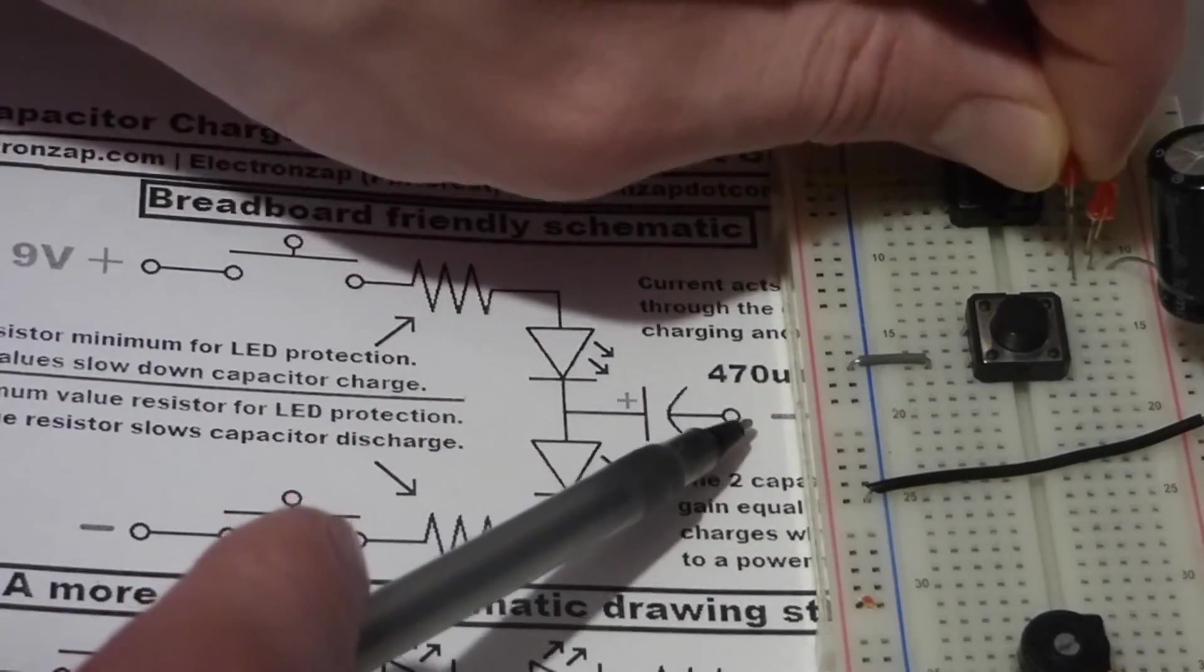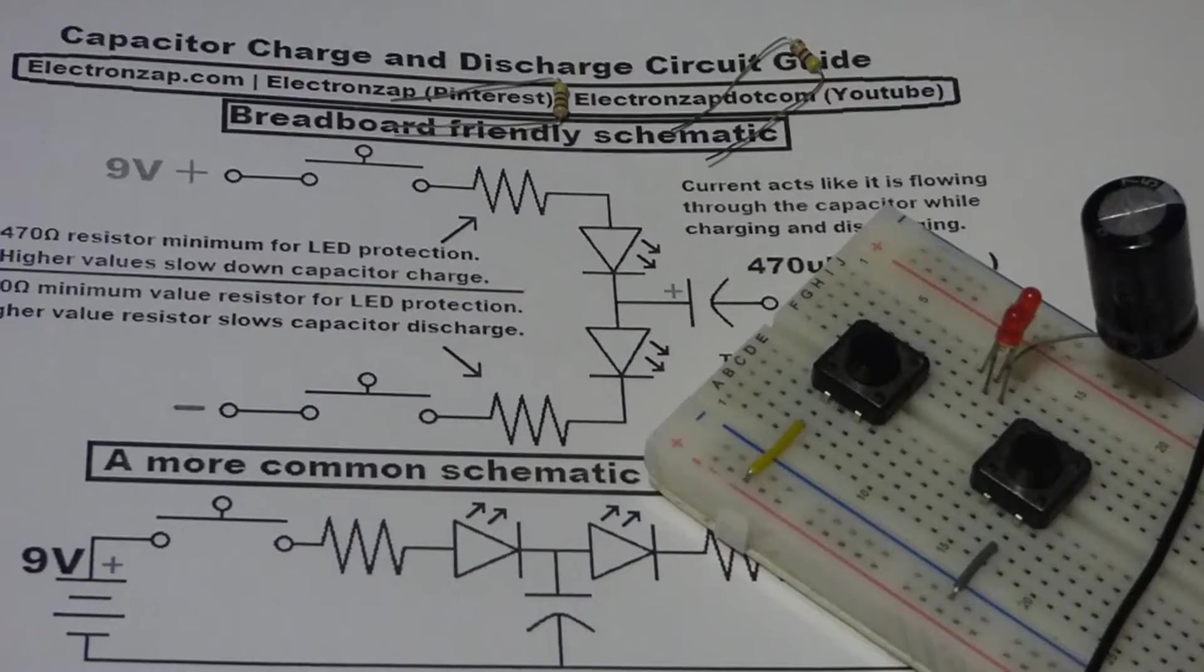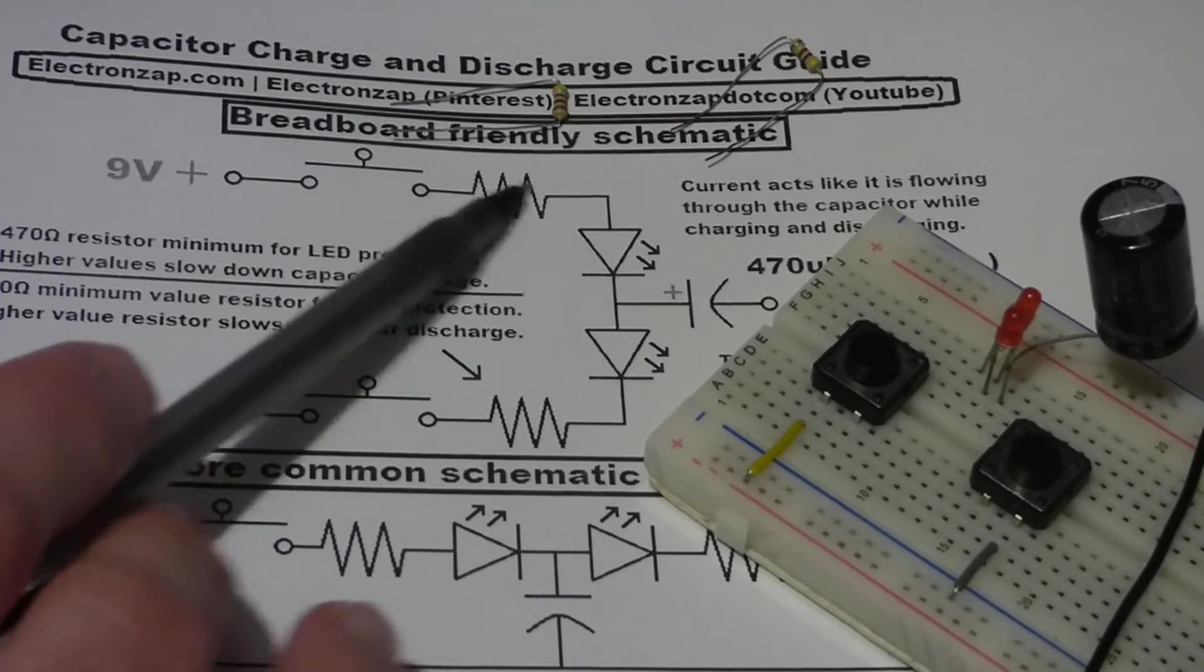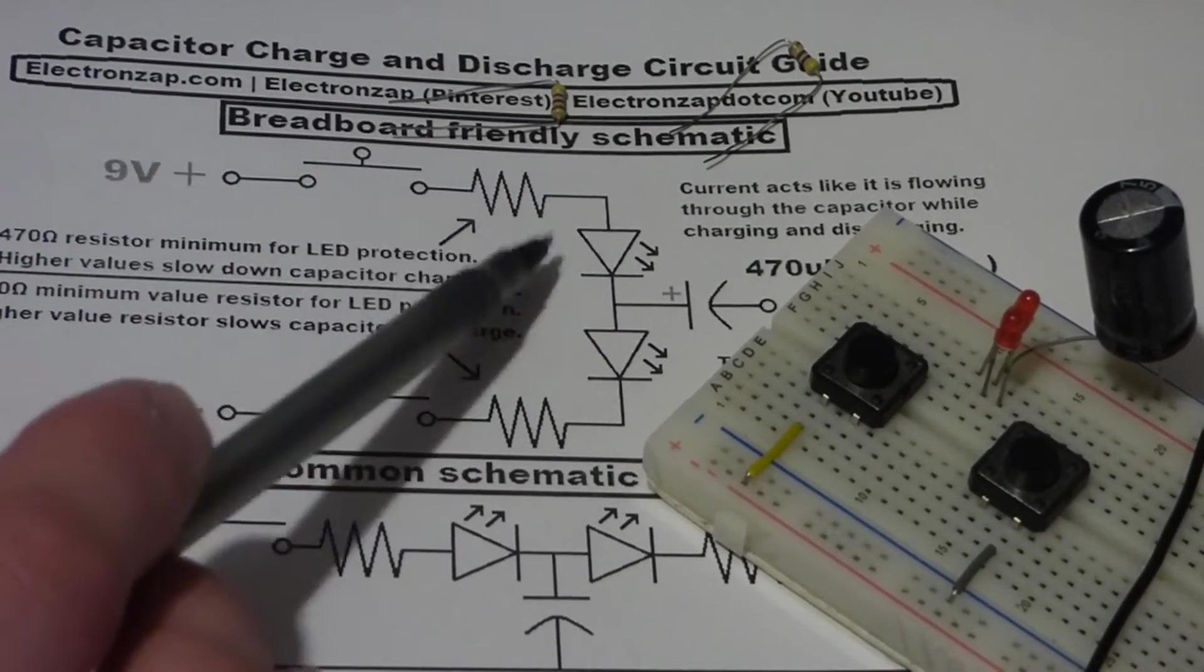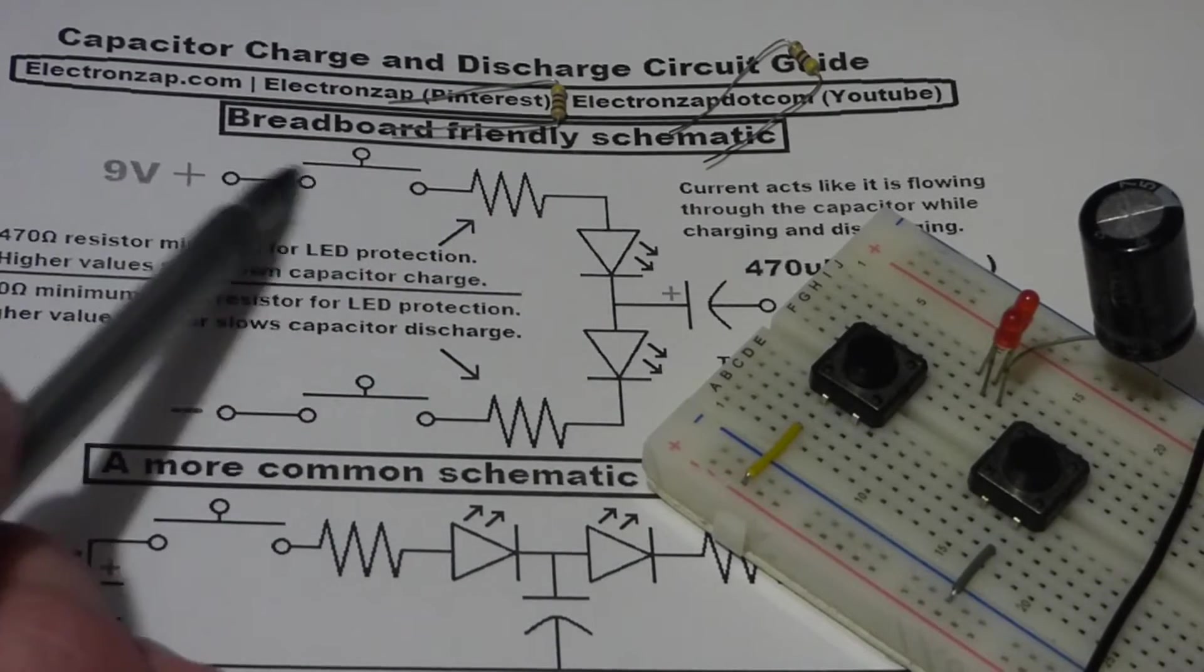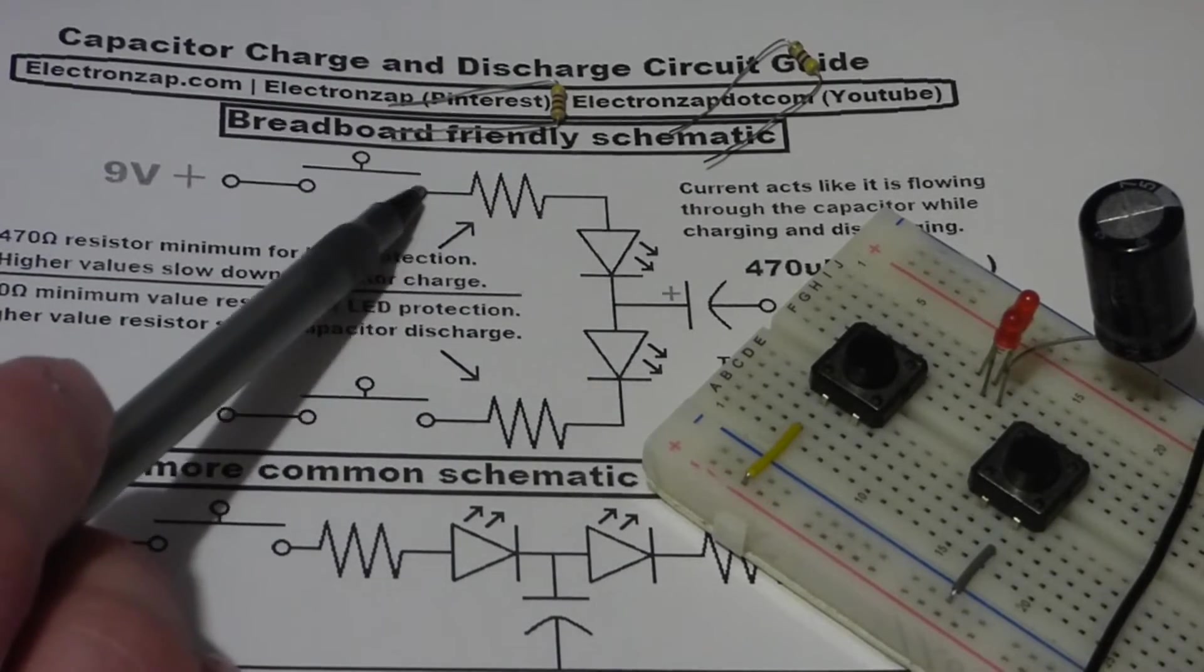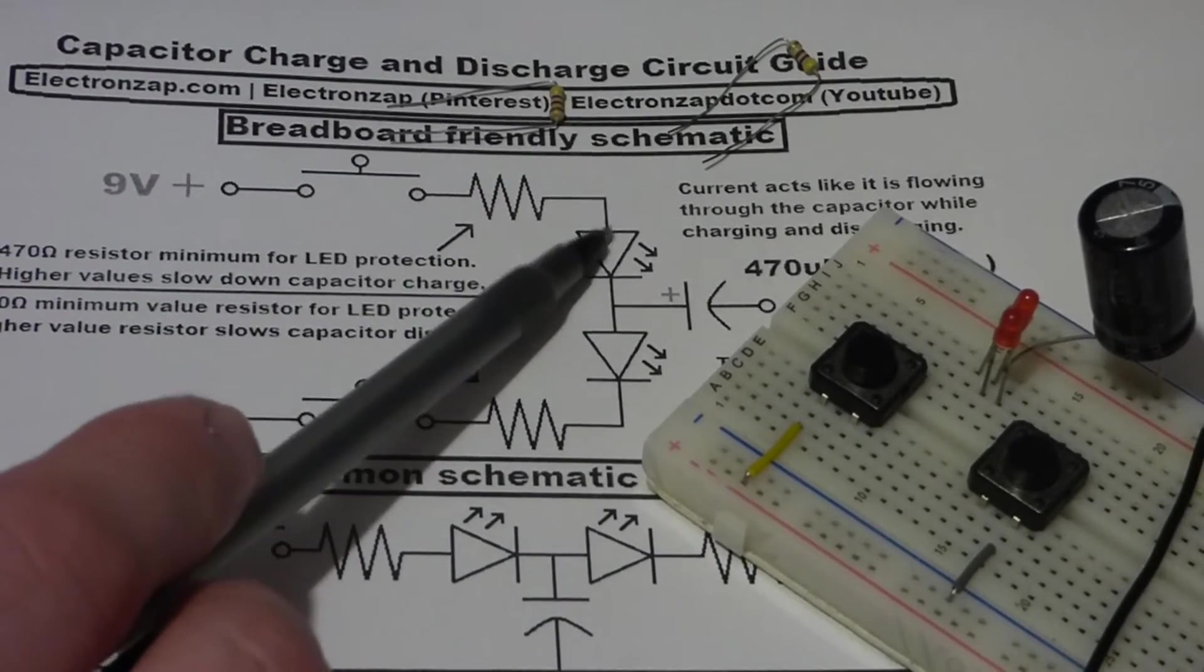So now we have the resistor here. This protects mostly the LED from too much current from the battery, but maybe the switch too, because that will have a sudden massive amount of current when you first push it. So it goes from the switch to the anode, the long lead of the LED.